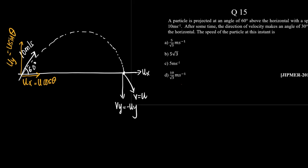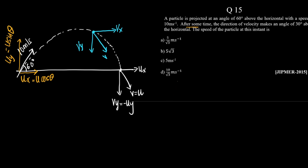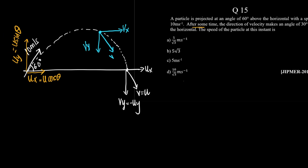Now, after some time, let's say here the velocity can be resolved into vx and vy, and the net velocity is v. It makes an angle of 30 degrees above the horizontal — so this angle is 30 degrees.